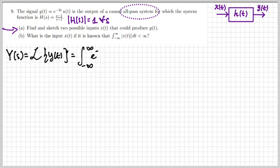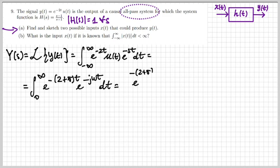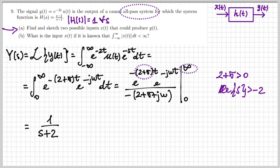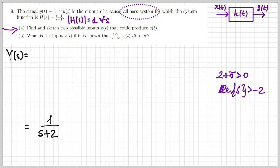For part A we need to find inputs x(t) that produce the given output y(t). I calculate the Laplace transform Y(s) using the integral definition. Evaluating between zero and infinity, convergence requires 2 + σ > 0, giving the region of convergence Re(s) > −2. The result is Y(s) = 1/(s+2), with region of convergence Re(s) > −2.